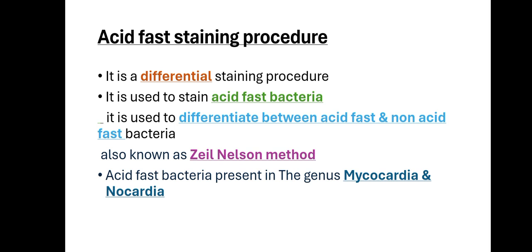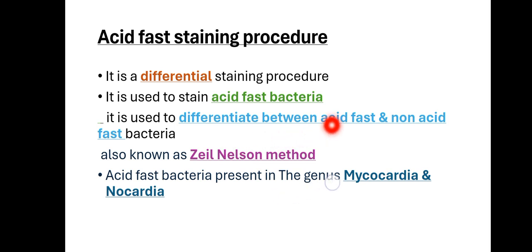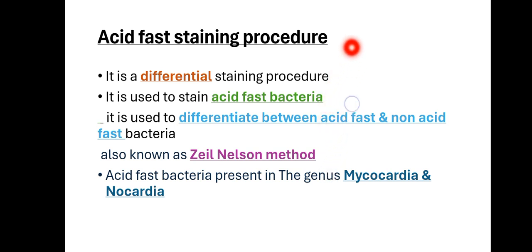Acid fast staining is a differential staining procedure, which means we can differentiate something. What we differentiate here is acid fast and non-acid fast bacteria. It is also known as the Ziehl-Neelsen method — this method is also commonly known as the Ziehl-Neelsen method.